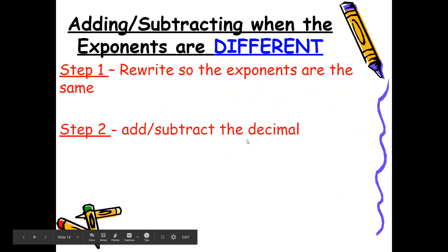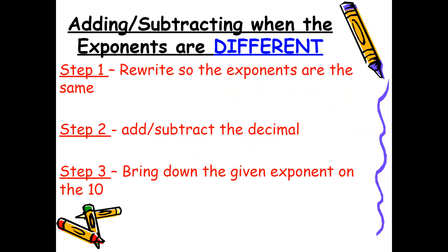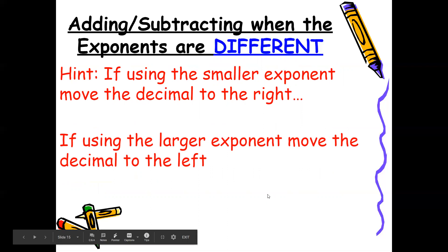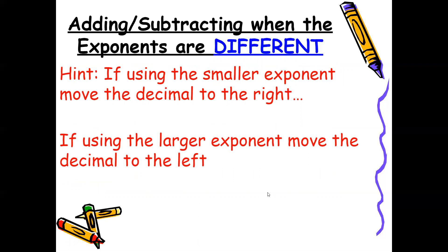You're going to rewrite so the exponents are the same. Once your exponents are the same and you have moved your decimal or your coefficient, you can then add or subtract the coefficients and bring down the exponents. If your answer is not in scientific notation form, place the decimal after the digit that falls between 1 and 10. If using the smaller exponent, move the decimal to the right; if using the larger exponent, move the decimal to the left.